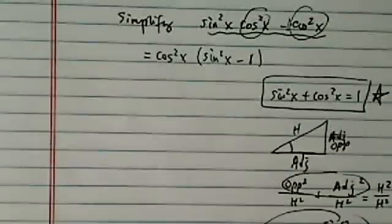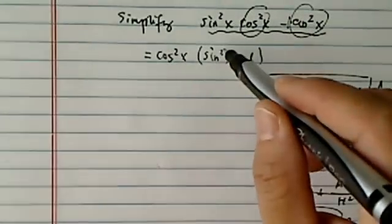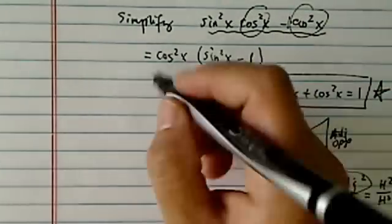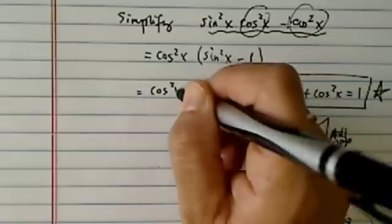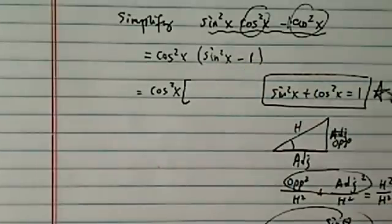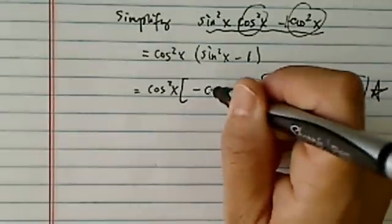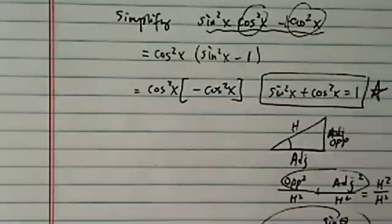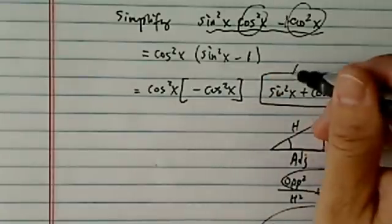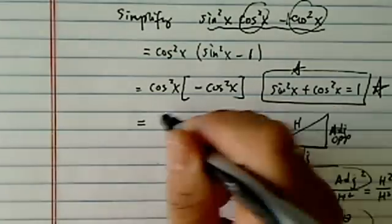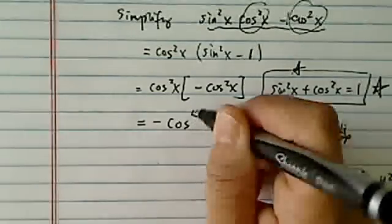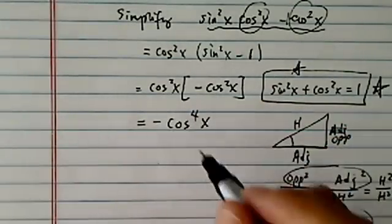Now, coming back to our question here, I have sine squared x minus 1. So this becomes cosine squared x. Since sine squared and cosine squared, when you add them equal to 1, then sine x squared minus 1 becomes minus cosine squared. And you're just going to move this one basically using the first thing I said over here. And then multiplying them together, you have minus cosine to the fourth of x.